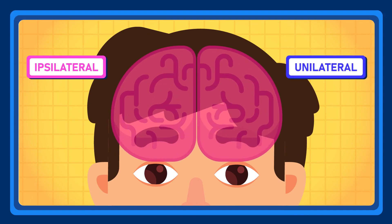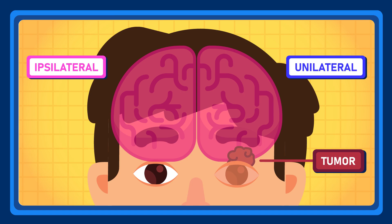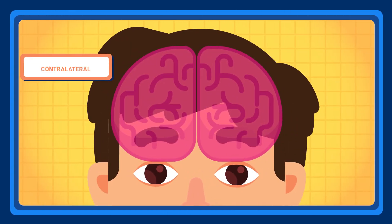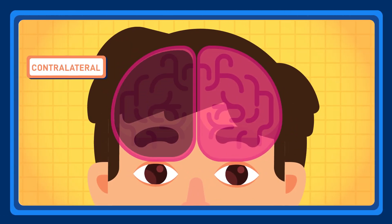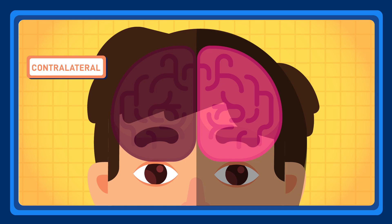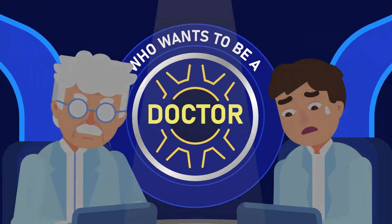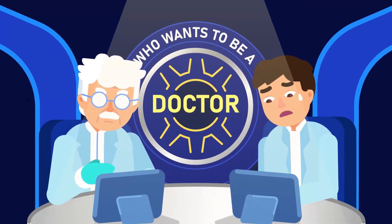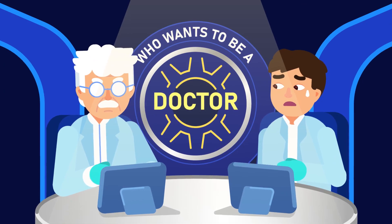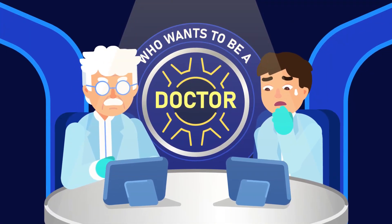Ipsilateral or unilateral means on the same side of the body, such as when a tumour affects one of your eyes. Contralateral means on the other side of the body, such as when a stroke occurs in the brain. Now, after learning all of those rules, the surgeon would be more prepared for their first surgery.